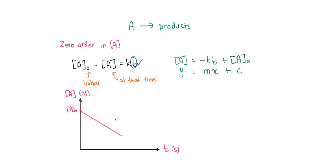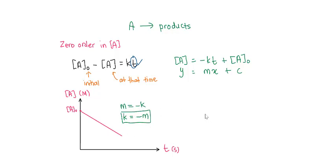From this graph, you can find the value of K: K equals negative gradient. So if the question asks you to determine the order of reaction using a linear graph method — if you plot this graph and get a straight line with a negative slope, it means that the reaction is a zero-order reaction.